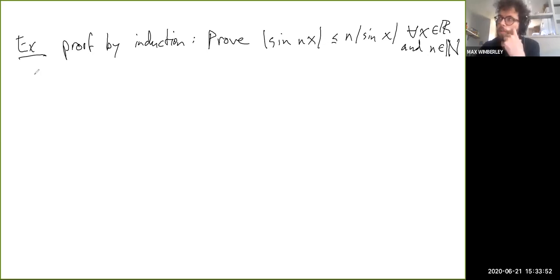So in this case, the base case is n equals one. And when n equals one, the equation is just literally, it's just obviously true because, or the inequality, sorry, is just true because you have sine x on both sides. So yeah, obviously absolute value of sine of x is less than or equal to itself. So the base case is sort of obvious, I'll say. Sorry, the handwriting is a little bit shabby there.